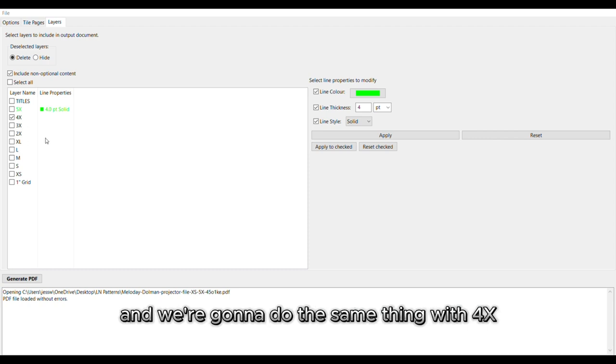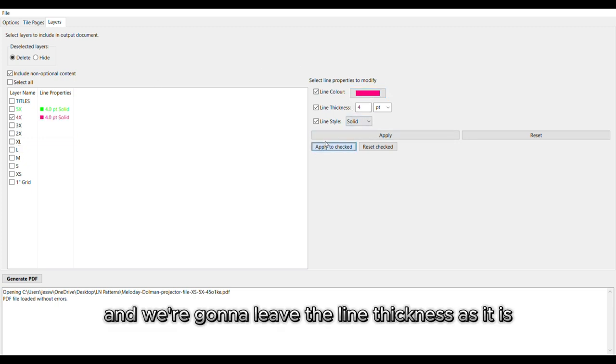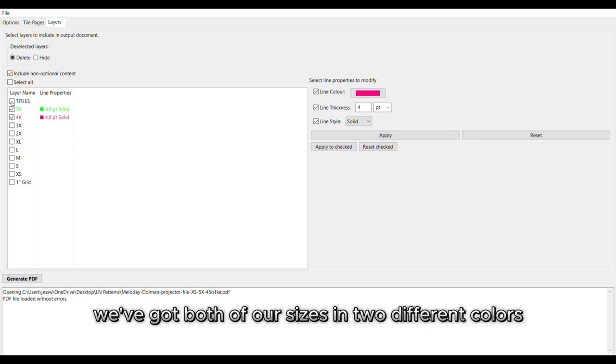So now it says that 5x is green. Now we're going to do the same thing with 4x, but we're going to make that a super fun bright pink. And we're going to leave the line thickness as it is. Apply to checked.